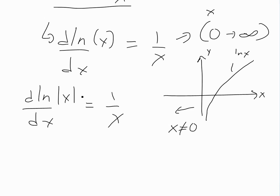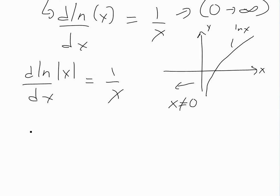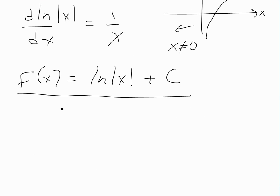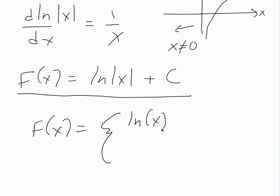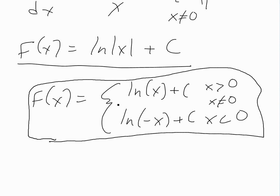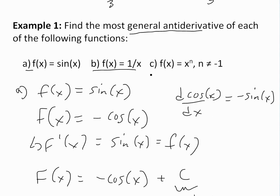The most general antiderivative is F(x) = ln|x| + C. We can write this as a two-part answer: F(x) = ln(x) + C when x > 0, since absolute value does nothing there, and F(x) = ln(−x) + C for x < 0. Remember x cannot equal 0. So this is the most general antiderivative of 1/x.